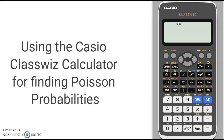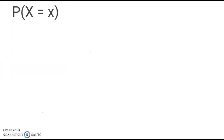In this video, we're going to briefly go through how to use the Casio ClassWiz calculator to find Poisson probabilities. To start with, we're going to look at finding the probability that x is equal to a given value.